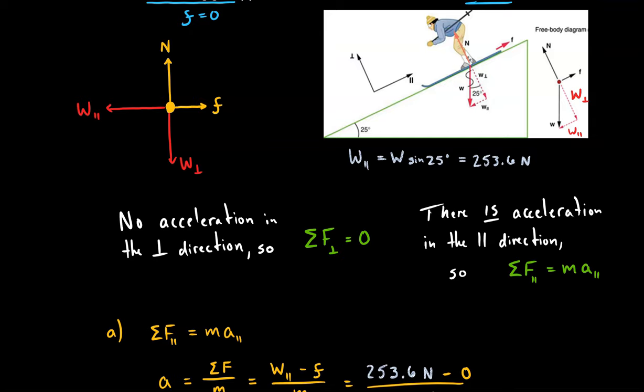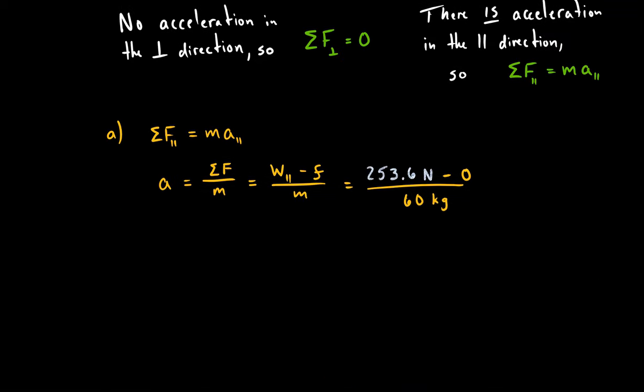Remember, that's just using trig, SOHCAHTOA, in this triangle right here, to solve for that opposite side from our angle. So we use sine. And once we do that, we plug everything in, and we get our final answer of 4.23 meters per second squared for the acceleration.